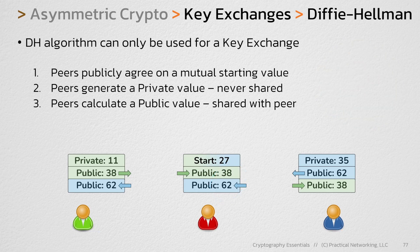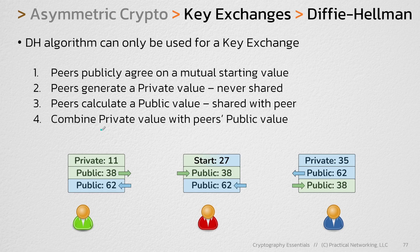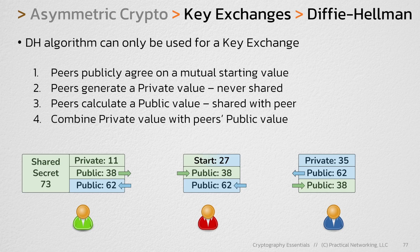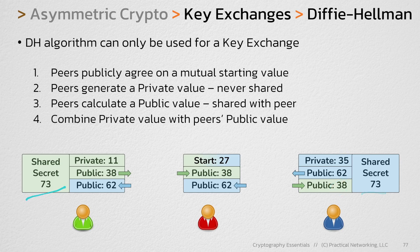The last step of Diffie-Hellman is for each peer to combine their private value, which was never shared, with their peer's public value, which was shared in the last step. So the green user is going to take 11, their private value, and combine it with 62, the public value shared by the blue user. Using addition, 11 plus 62 gets a 73. The blue user will then do the same thing — they'll add 35 plus 38 to also get 73. And once we have that shared secret on both sides, we can use that to generate any amount of symmetric secret keys to encrypt data between the green and the blue user.